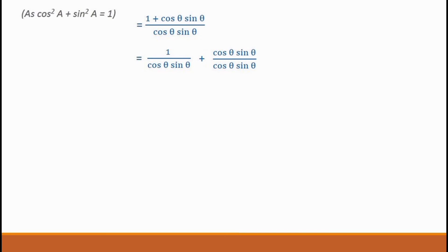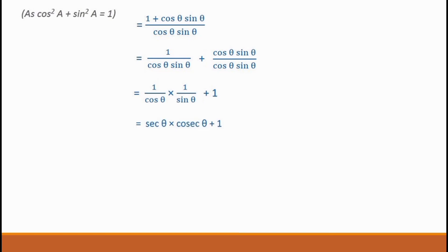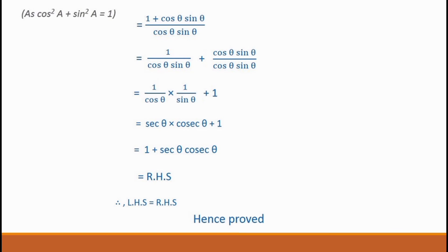Now let's rewrite this. Look at the denominator: cos θ and sin θ. Let's split this: 1 by cos θ into 1 by sin θ, plus cos θ by (cos θ · sin θ). That gives 1/cos θ plus 1/sin θ plus 1, which equals sec θ plus cosec θ plus 1. And that is our RHS. Thank you.